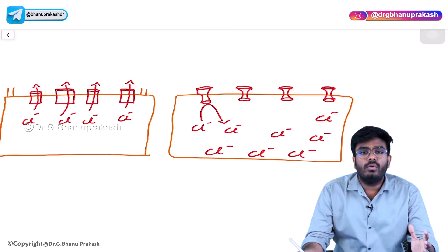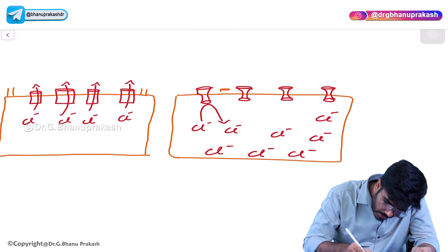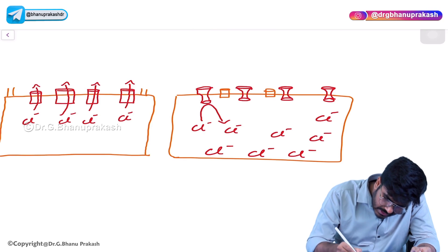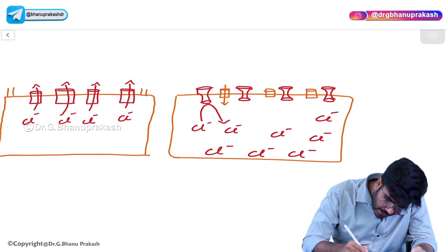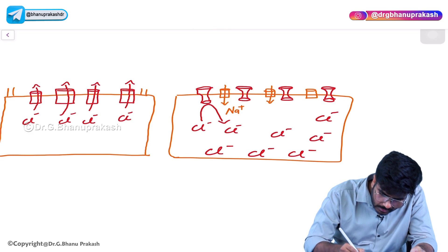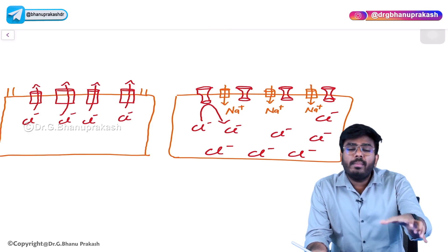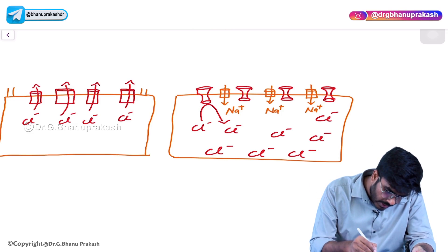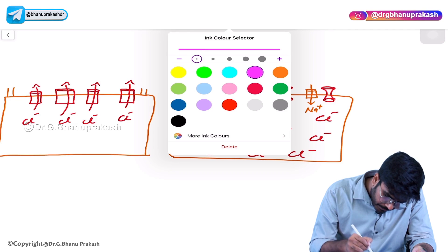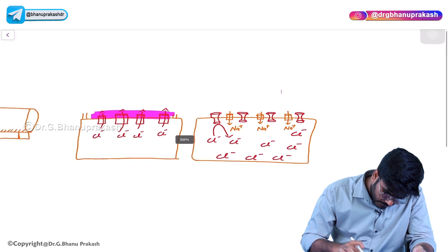In order to maintain electroneutrality, the cell will open sodium channels. These channels are going to bring sodium inside to neutralize that extra negativity. So sodium is coming into the cell. The problem is, whenever sodium is coming into the cell, it is going to bring water along with it. Usually, mucus is present in the respiratory tract.